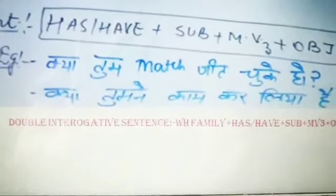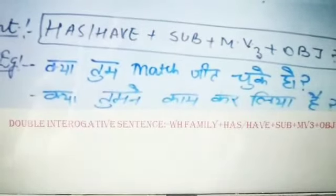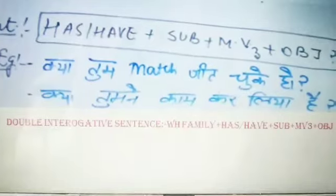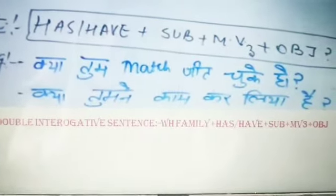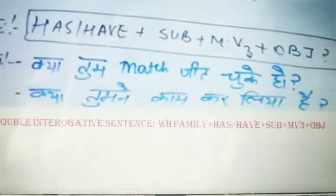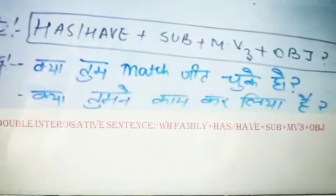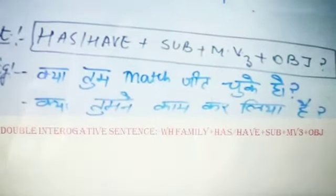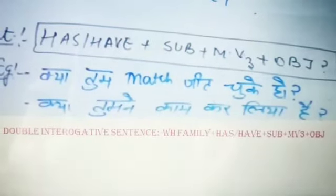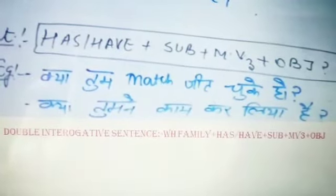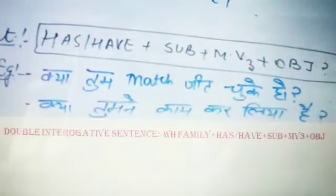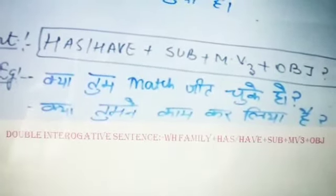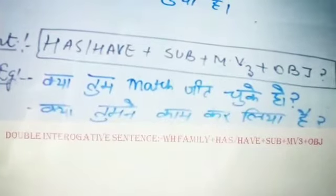There are also Double Interrogative sentences. As I explained, in a Double Interrogative sentence, the WH-family word always comes first, then the helping verb, then subject, then verb's third form, then object. For example, changing 'Have you won the match?' to 'When have you won the match?' — that is our Double Interrogative sentence.